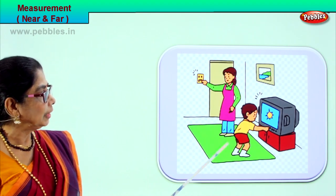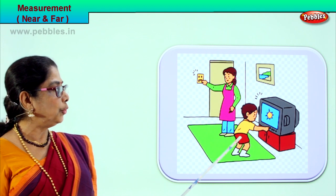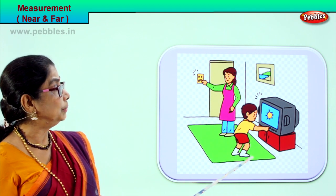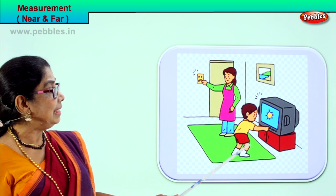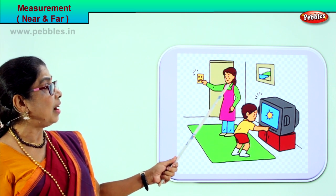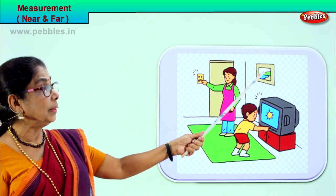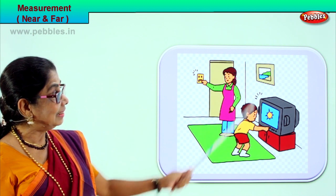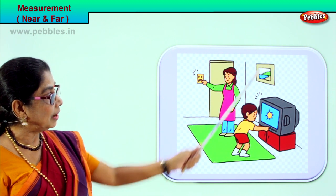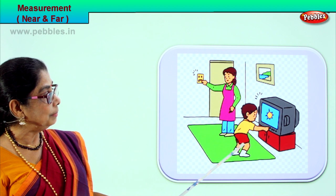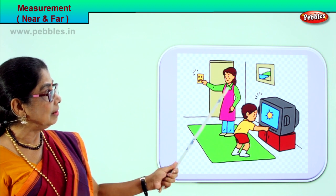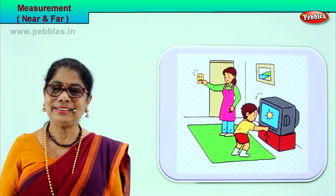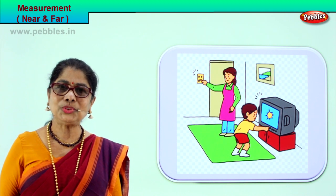Look at this lovely picture. Can you see a little boy? He is trying to put on the TV — he is near you. And mummy is far away, nearly at the door. The baby is near, mummy is far. Near and far — now you understand.